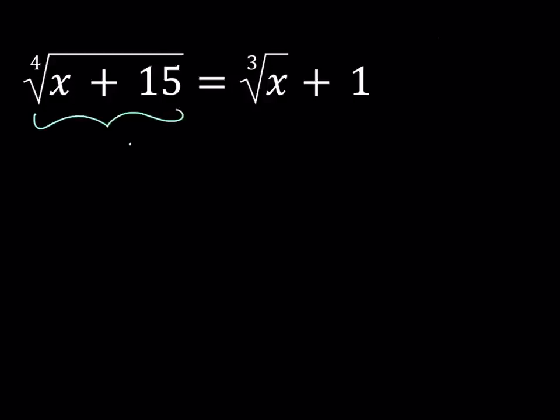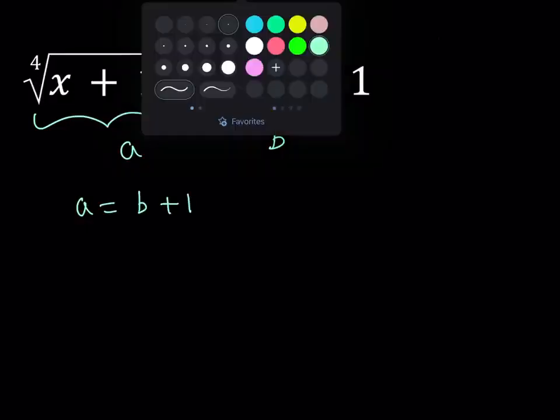I'm going to call this A and I'm going to call this B. So how do we proceed? Well, here I get a simple equation. A equals B plus 1. Nice. But that's not the end of it. We get more information. So let's go ahead and take a look at that.